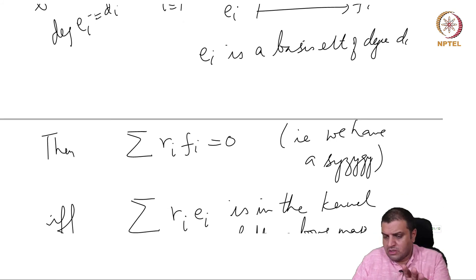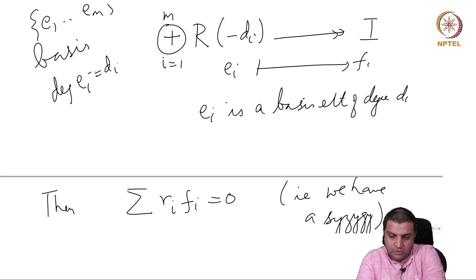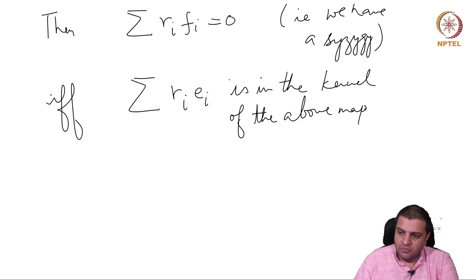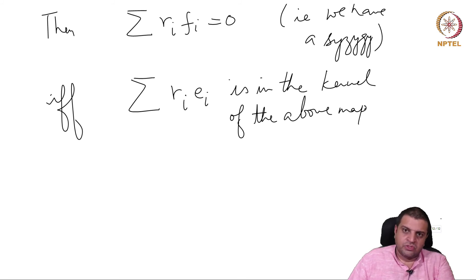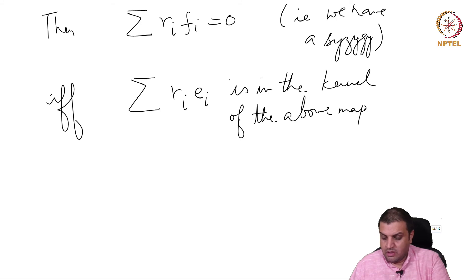Building this up into what is called a free resolution is what we will be doing in the next few lectures. But before that, I want to show an example which tells us that if you know how to compute Gröbner bases, then you can compute syzygies. We will do it for an ideal now; later I will mention that it can also be done for modules.